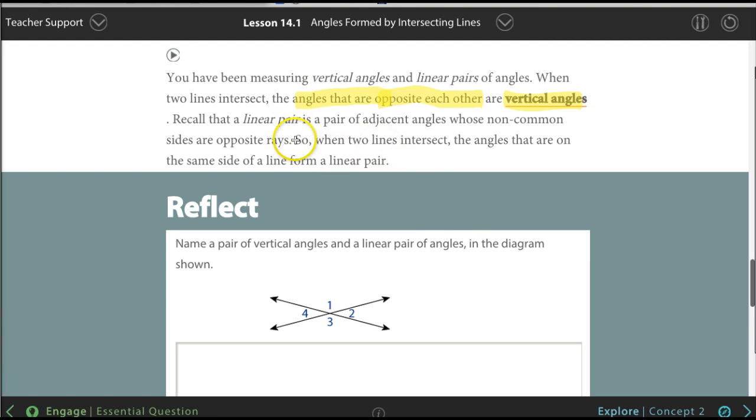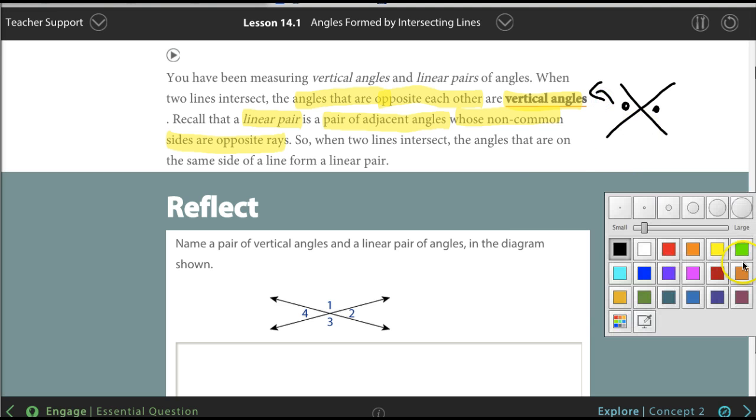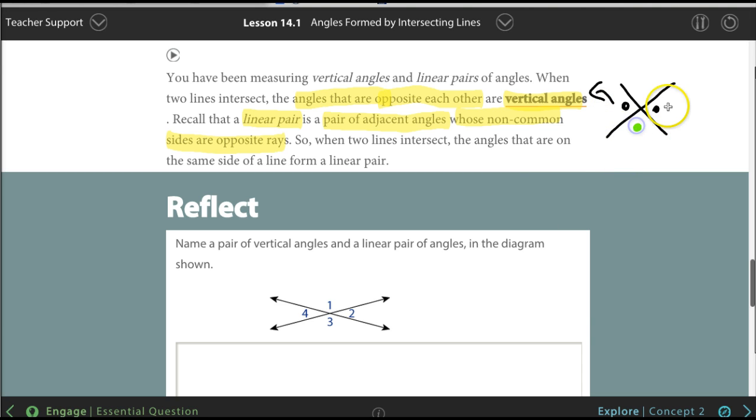And then what is a linear pair? A pair of adjacent angles whose non-common sides are opposite rays. So a linear pair would be this angle and this angle. When you add the two green angles together, it's going to be 180 degrees, which is a straight line. There are some basics that are missing here. I'm hoping that you remember everything from middle school.